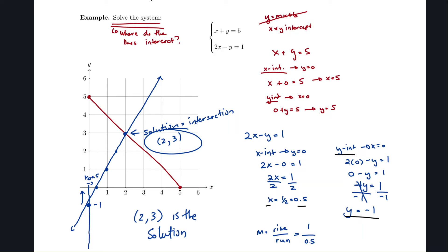We graphed both lines using x- and y-intercepts, then used slope (rise over run) to find subsequent points on the blue line until it intersected the red line. However, this graphing method only works well when the solution is at nice integer values and near the origin. Many systems have non-integer solutions or intersections far from the axes, making graphing time-prohibitive. So we need methods that always work.